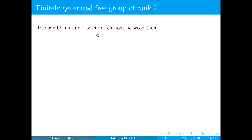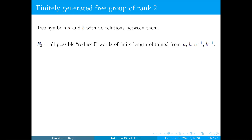When I say no relations, I mean they are not, for example, AB is not equal to BA. So these are just two symbols — we are completely free. F2 would be all possible reduced words of finite length obtained from A, B, A inverse, and B inverse.